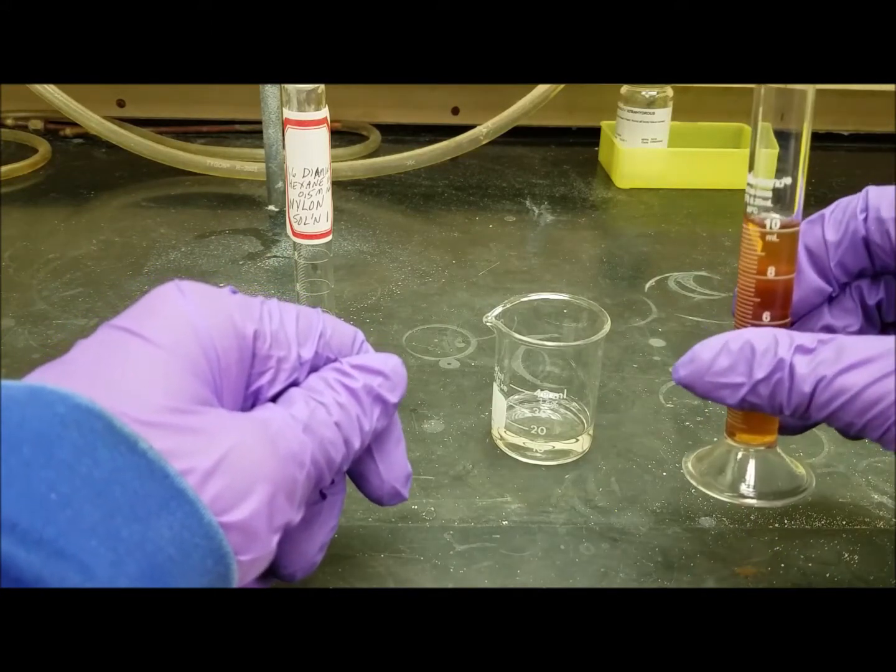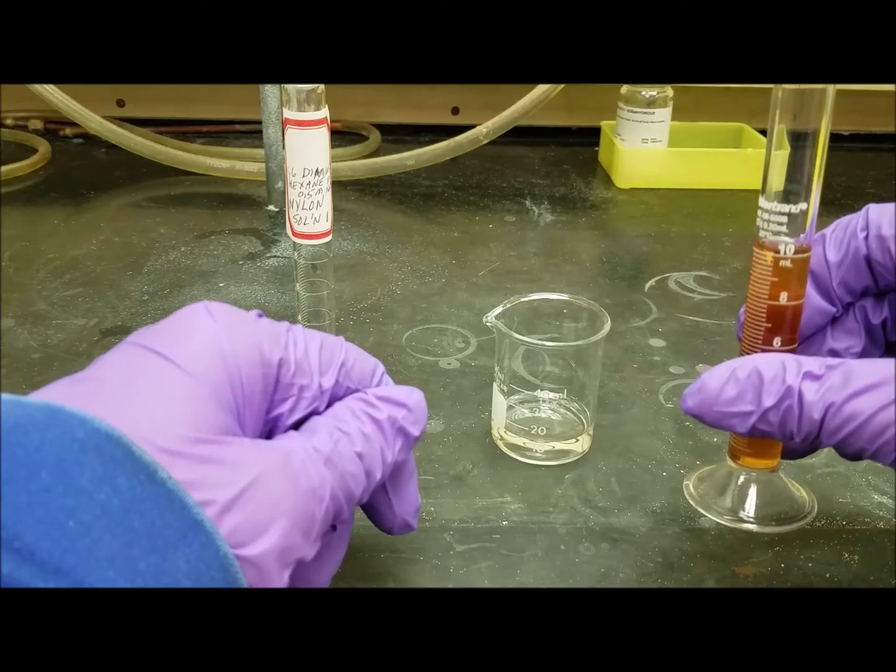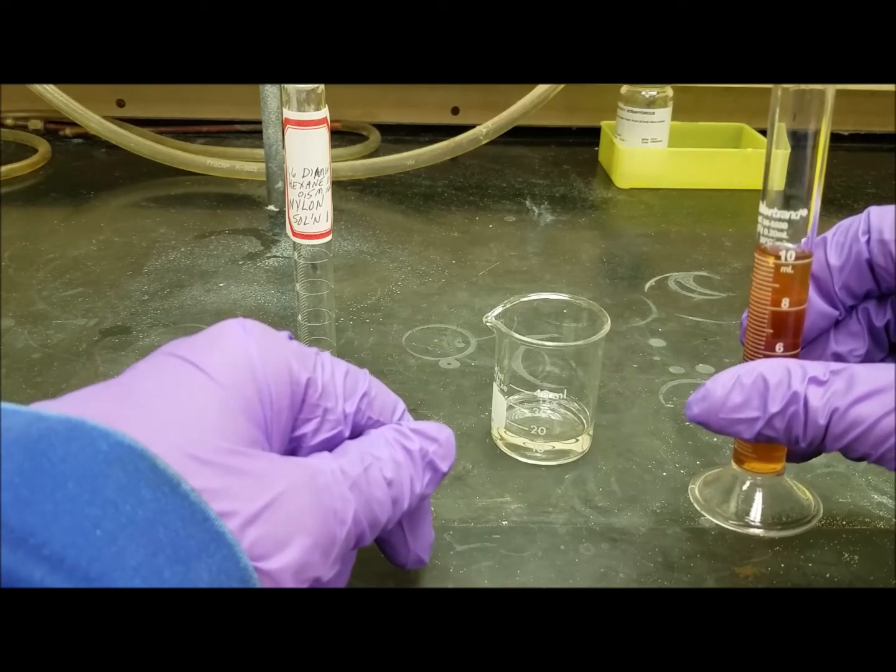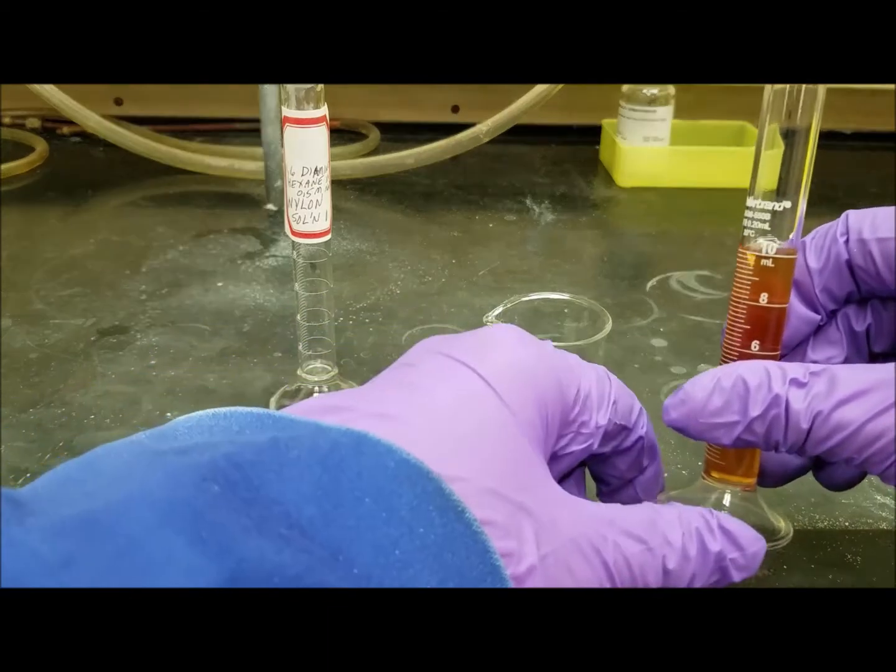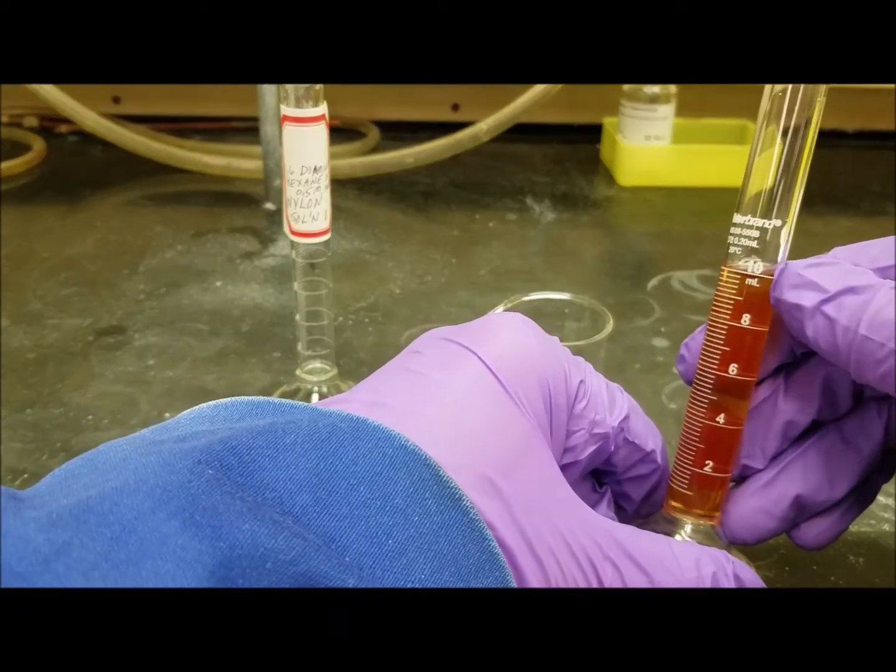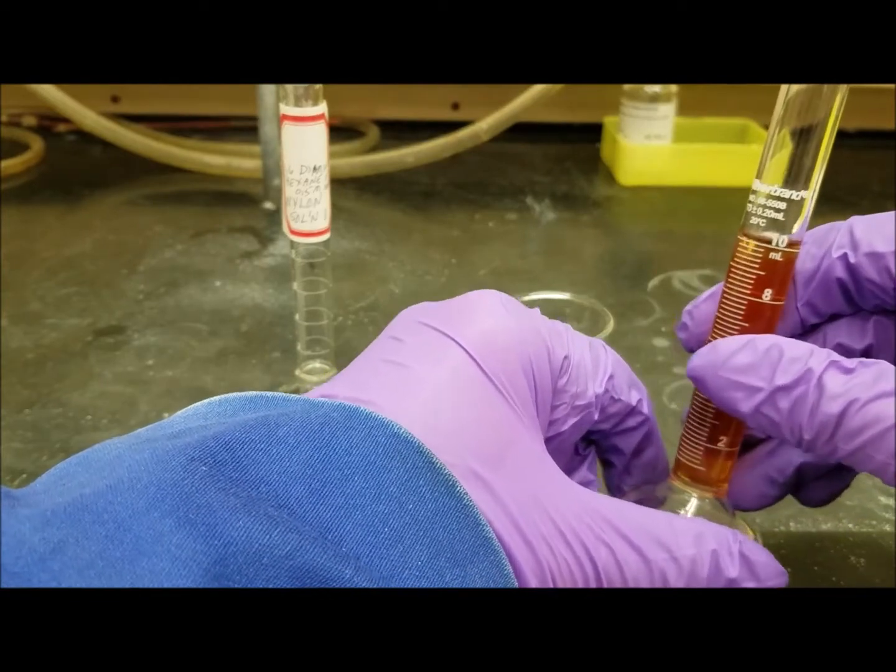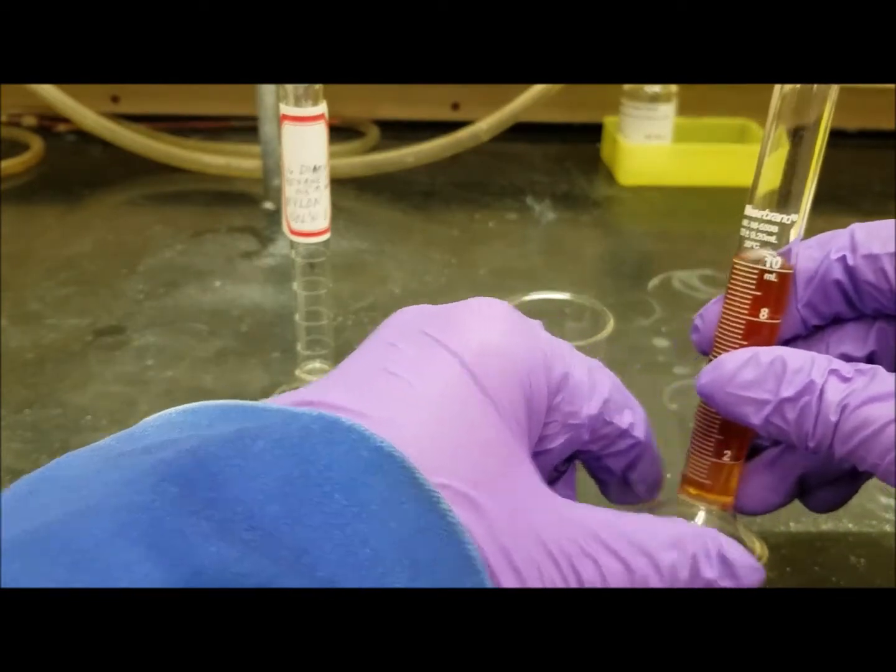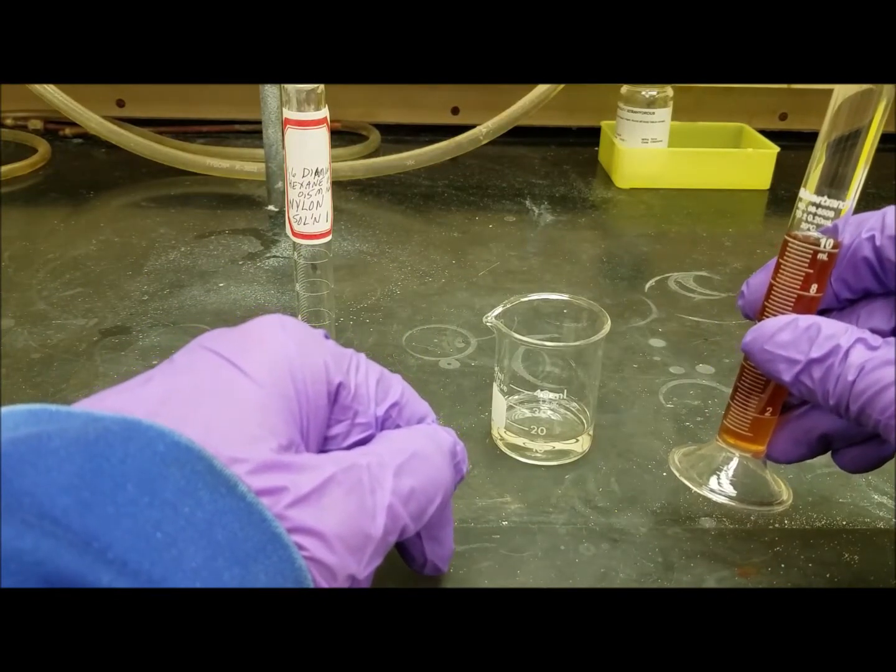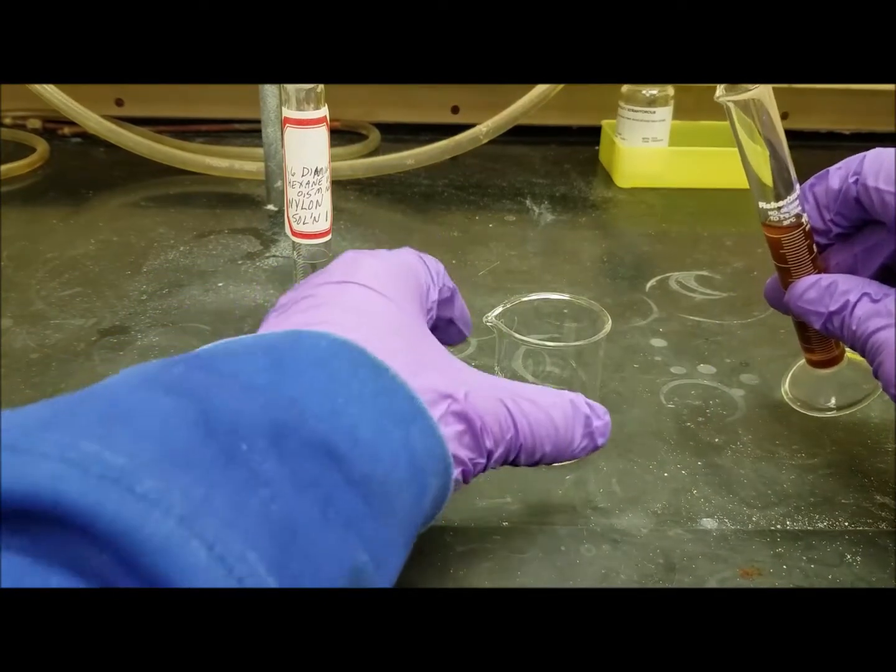And here, this is a solution of adipoil chloride. So this is a six-member carbon chain with acid chlorides on the other end. And acid chlorides react with amines. But this is dissolved in cyclohexane. Cyclohexane and water don't mix, kind of like oil and water.